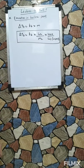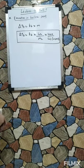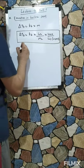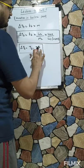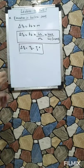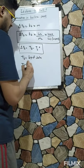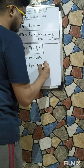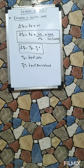Molality M equals W2 divided by M2, multiplied by 1000 divided by W1 — where W2 is mass of solute, M2 is molar mass of solute, and W1 is mass of solvent in grams. If W1 is in kg, no need to multiply by 1000. And delta Tb equals Tb minus Tb°. So the formula delta Tb equals Kb times M is what we need to use for numericals in the next part.